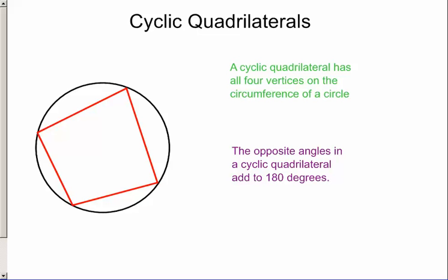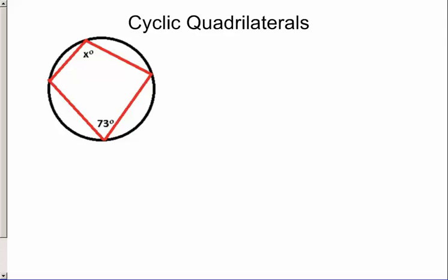So let's look at some examples now of cyclic quadrilaterals and questions we might be asked. So here we've got a cyclic quadrilateral with all four vertices on the circumference of the circle, and we're asked to find x. We know that x plus 73 is equal to 180. So x is equal to 180 minus 73, and that is equal to 107 degrees.